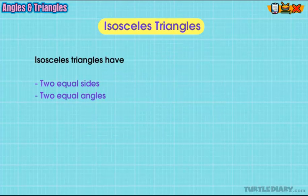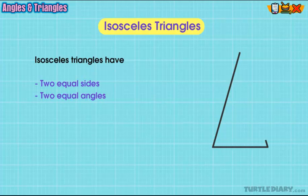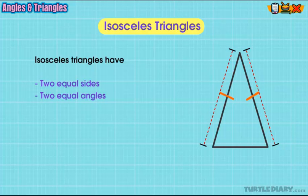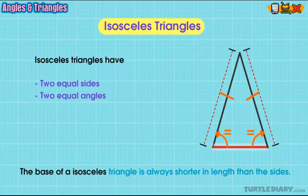Two sides of an isosceles triangle are equal, which means that two of its angles will also be equal. The base of an isosceles triangle is always shorter in length than the sides.